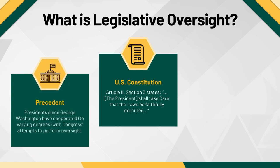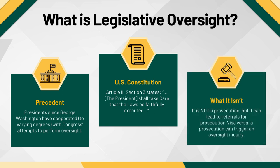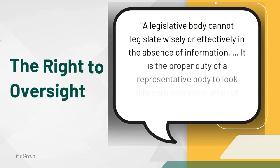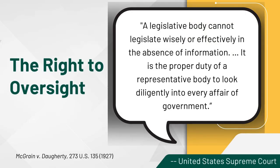Presidents beginning with George Washington have cooperated, to varying degrees, with Congress's attempts to conduct oversight. A legislative oversight investigation is not a prosecution — there are different goals and authority. However, an oversight investigation can lead to referrals to law enforcement for prosecution, and vice versa. In the McGrain v. Doherty case, the Supreme Court, nearly a century ago, established that Congress has broad latitude to investigate virtually any issue, provided that the probe serves a valid legislative purpose and does not otherwise violate the Constitution.